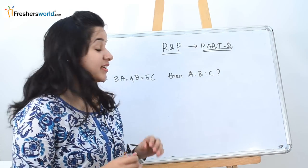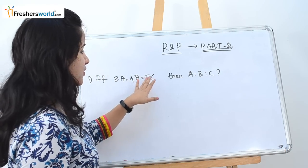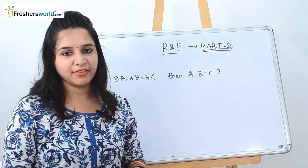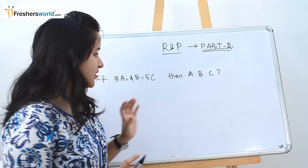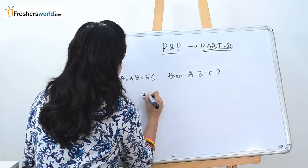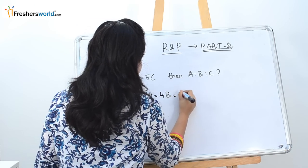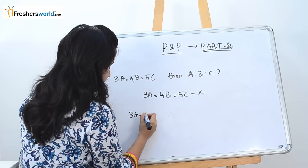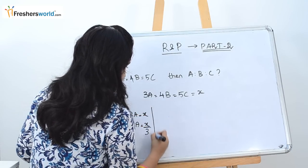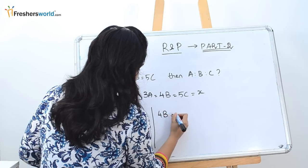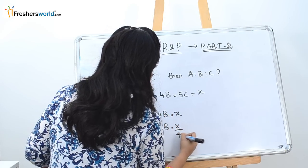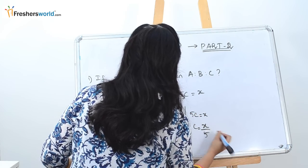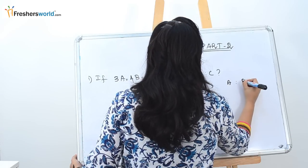The next question is: if 3A = 4B = 5C, then find A:B:C. In the last question everything was in fraction form and we equated it to x. We use the same method here. Equating to a constant x: 3A = x gives A = x/3. Similarly, 4B = x gives B = x/4, and 5C = x gives C = x/5. So A:B:C = x/3 : x/4 : x/5.